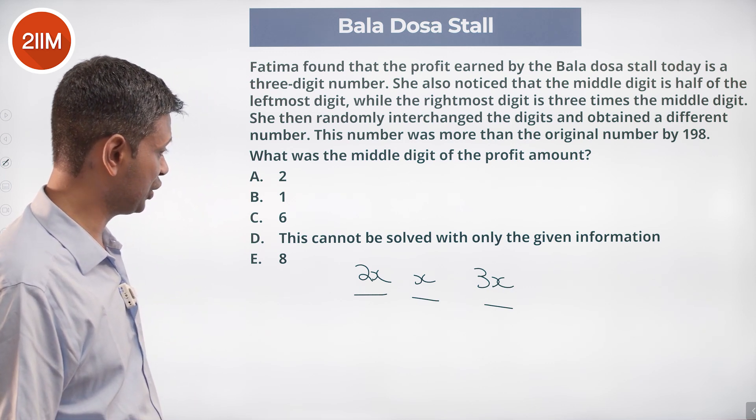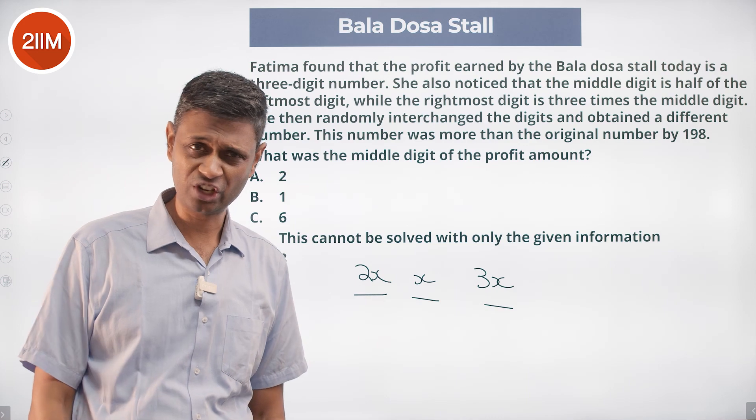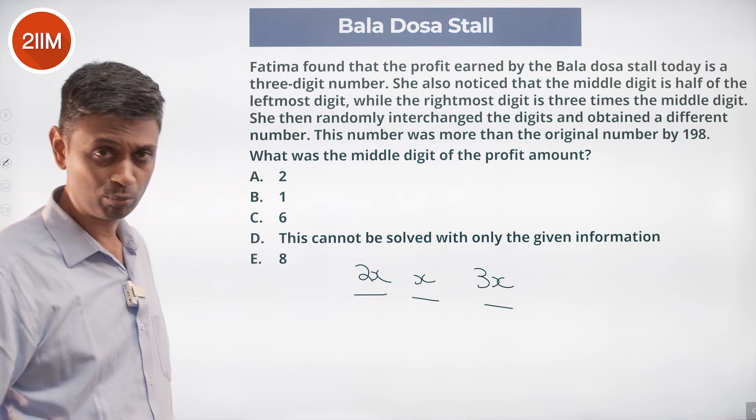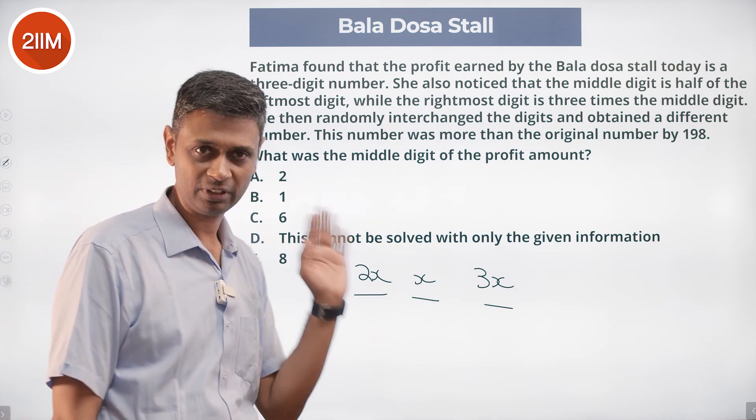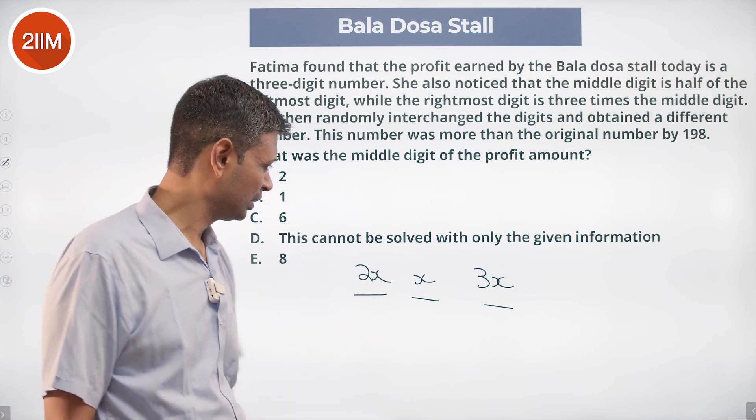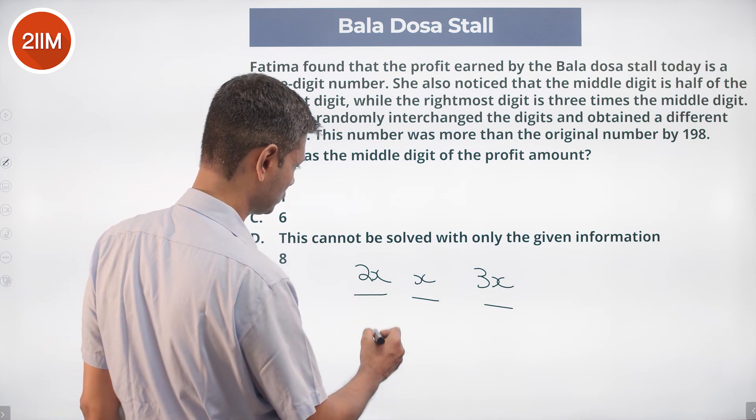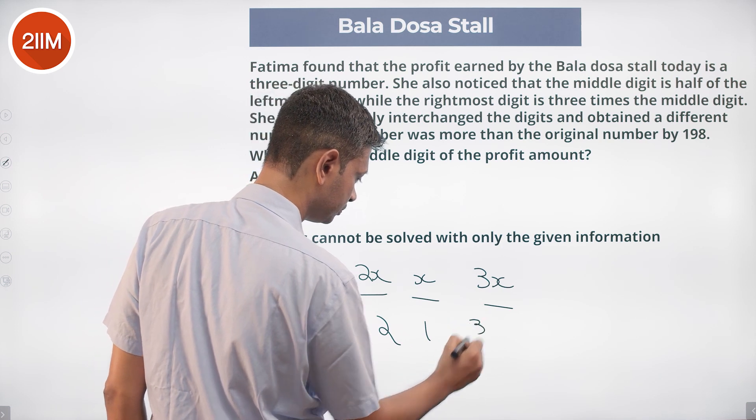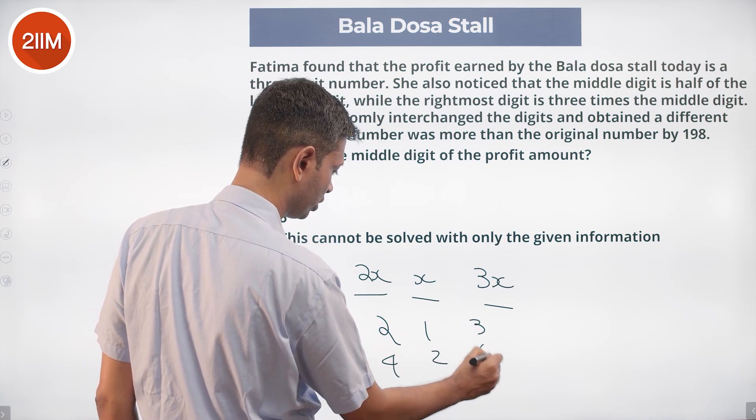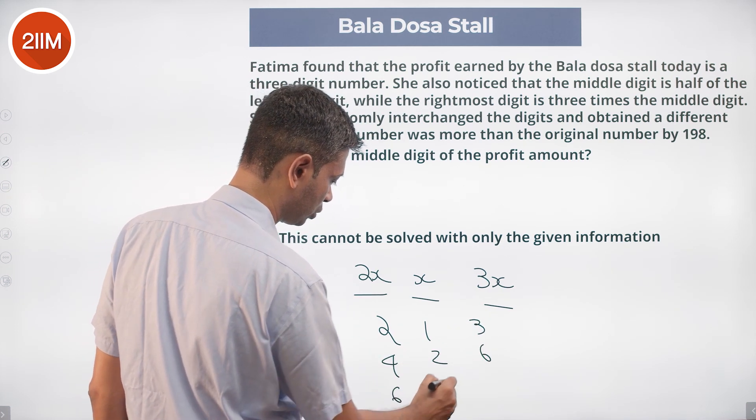What was the middle digit of the profit amount? She randomly interchanged the digits and the number was more, or we should start with 3x. First of all, these three are digits. We are looking at 2, 1, 3 or 4, 2, 6 or 6, 2, 9.